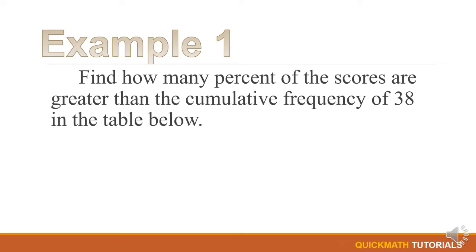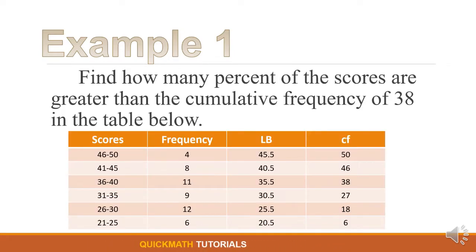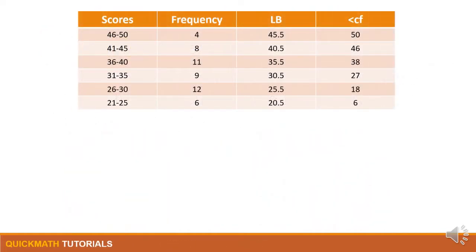So let's have our first example. Find how many percent of the scores are greater than the cumulative frequency of 38 in the table below. So we are given here the table. For our first step, let's determine in which class interval does 38 belong. So as you can see, 38 is within 36 to 40, so let's box this row.